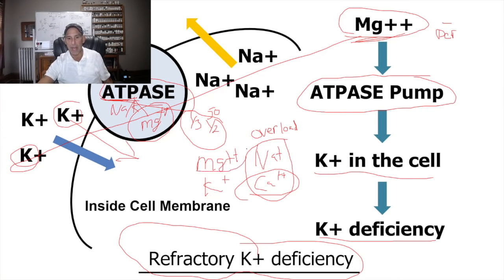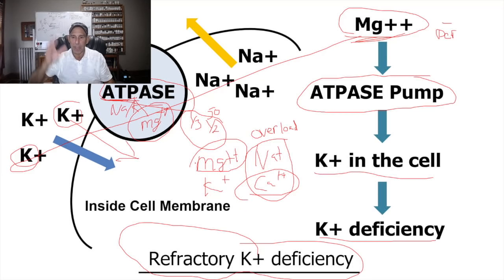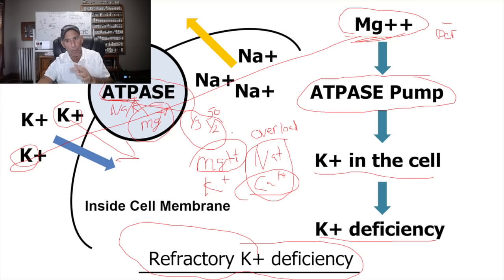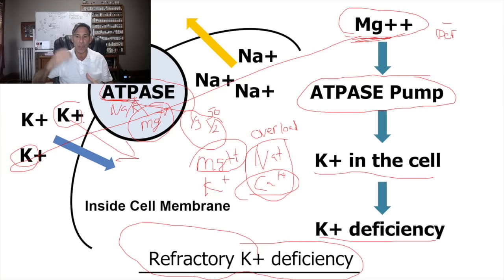In a magnesium-deficient state we cause a refractory potassium-deficient state, which causes a sodium and calcium overload — and over time that is the death of the cell. The whole point of mineral balancing is preventing premature aging. To modulate calcium we must understand the relationship of sodium and potassium, and how magnesium is the quarterback running the show — like Tom Brady, Joe Montana — a great quarterback is needed to win.